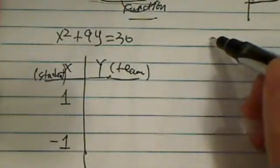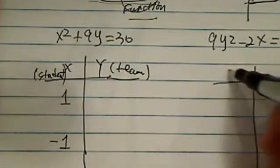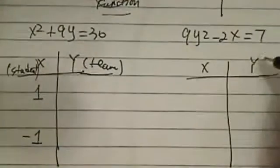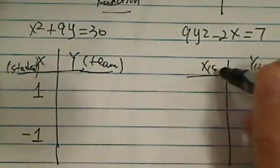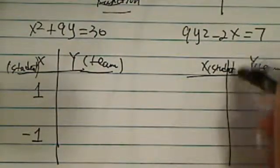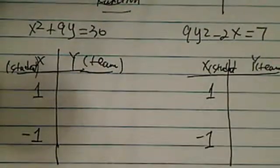If you make another one, you have 9y squared minus 2x equal to 7. You do the same thing here, x and y. And y again is the team. This is the student. You do 1 and minus 1. So you do the same idea.